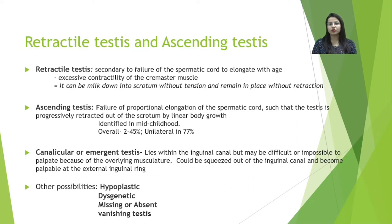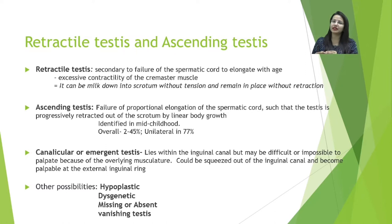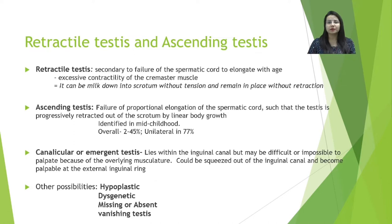Retractile testes are thought to be due to failure of the spermatic cord to elongate with age, combined with excessive contractility of the cremasteric muscle. Parents may report that at times the testis is present in the scrotal sac, while other times the sac is completely empty. A special feature of retractile testis is that it can be milked down into the scrotum and remains there without immediate retraction.